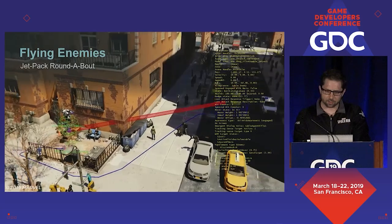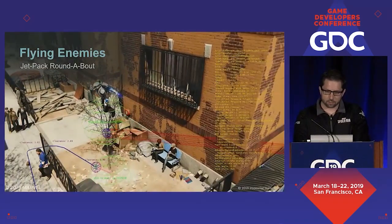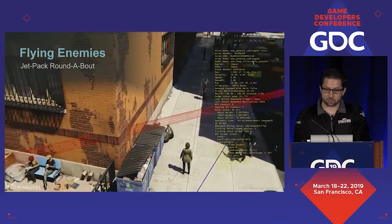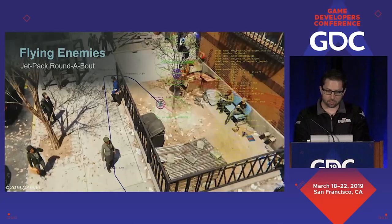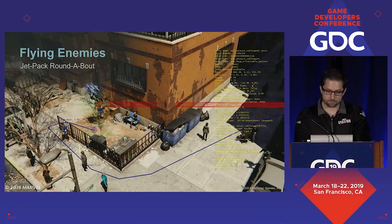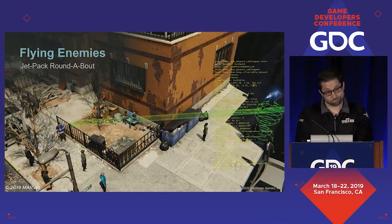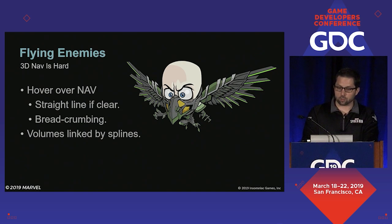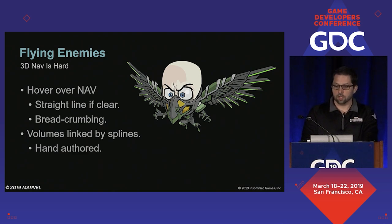Here's an example of how that happened. This jetpacker wants to go to Spider-Man. The red capsule indicates the physics query he performed to see if he could fly directly to him. However, because it clips the wall, he's going to have to follow this blue path along the ground, around the fence, until he can actually see Spider-Man. For our flying boss enemies, Electro and Vulture, they used a collection of volumes that were linked by splines. Inside the volumes the characters could move freely, and they could use the splines to transfer between the volumes. However, all of these had to be hand authored, so it was not a usable solution for the whole game. Both of these solutions got our game shipped, but they're far from ideal.